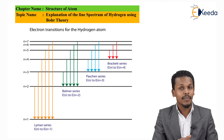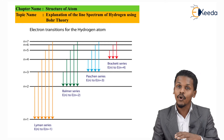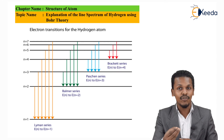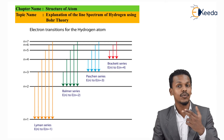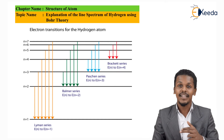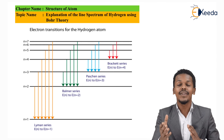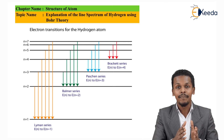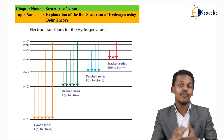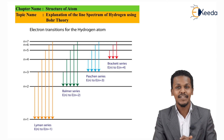Next is the Balmer series. In this case, the electron jumps from a higher orbital to the lower orbital, but the lower orbital is the second orbital — Nf = 2. So for hydrogen, the excited electron can jump from the third to the second orbit, from the fourth to the second orbit, or from the fifth to the second orbit, producing the Balmer series spectral lines.